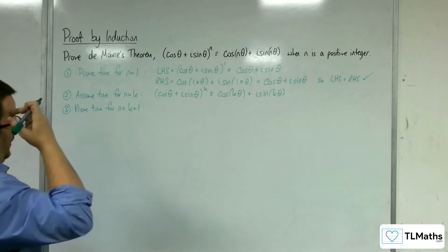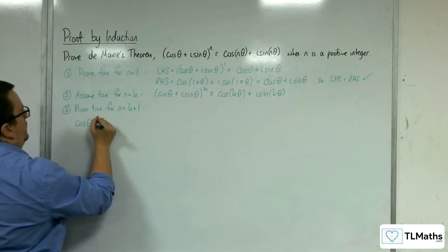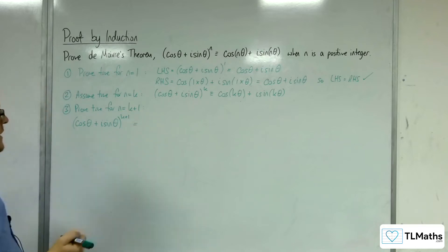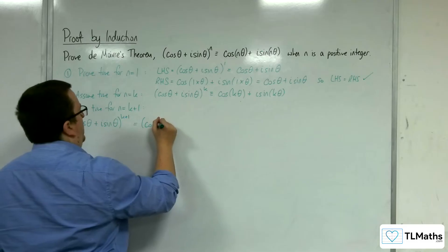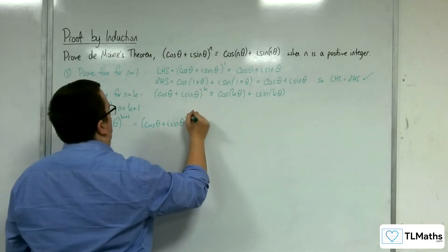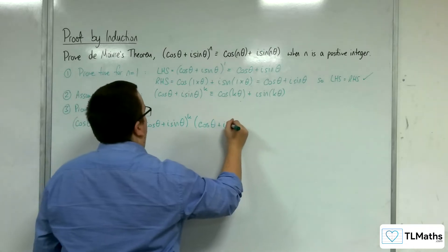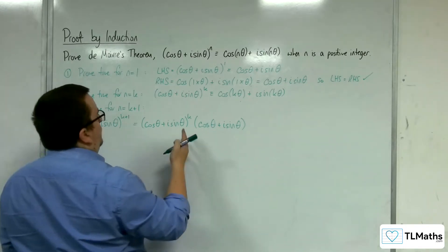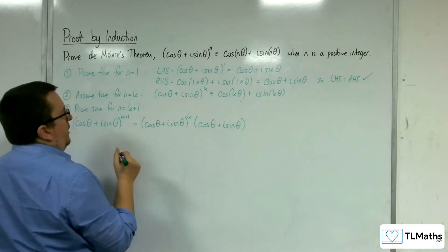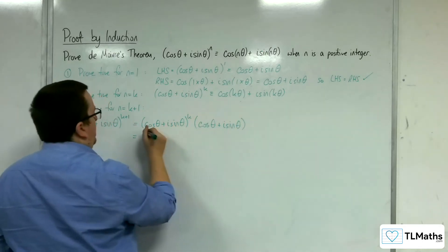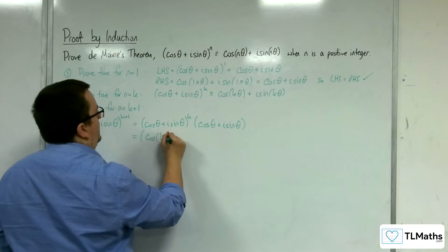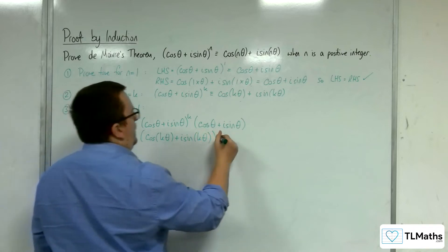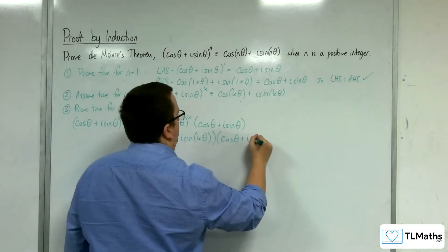So, (cos θ + i sin θ)^(k+1) = (cos θ + i sin θ)^k × (cos θ + i sin θ)^1. We know — we are assuming — that (cos θ + i sin θ)^k equals cos(kθ) + i sin(kθ). So we have (cos(kθ) + i sin(kθ)) multiplied by (cos θ + i sin θ).